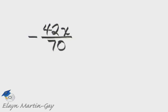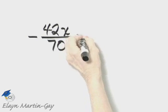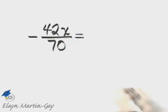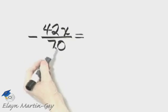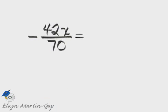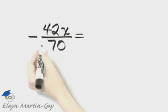Let's write this fraction in simplest form. I'm going to write the prime factorization of 42 and 70 so I can see all the common factors. I know there's at least a common factor of seven, but I'm not sure if there's more than that.